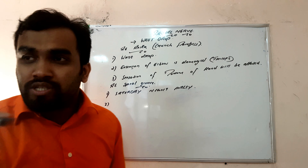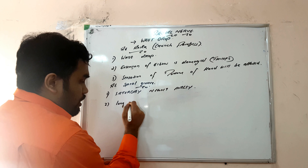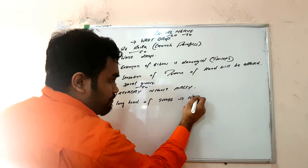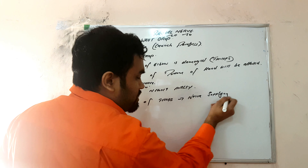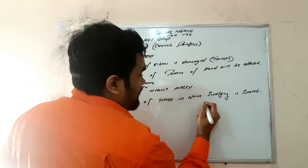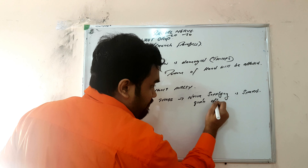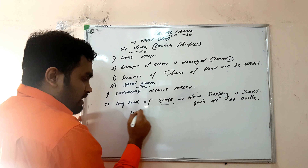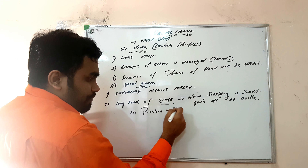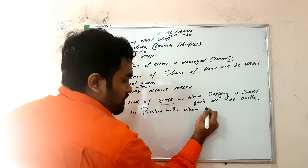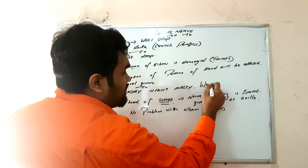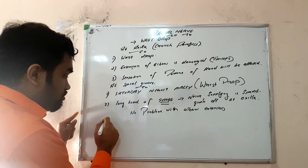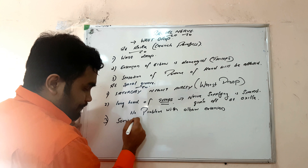In spiral groove damage, there is no problem with extension of the elbow because the triceps is spared — specifically, the nerve supplying the long head of triceps is given off at the axilla level, so it is not affected. Keep in mind there is no problem with elbow extension in Saturday night palsy. Wrist drop will be present, but elbow extension will not be affected. Sensation is also affected.